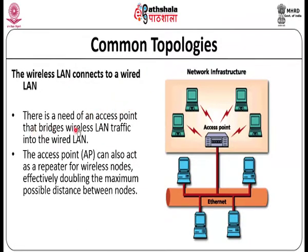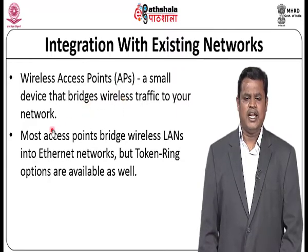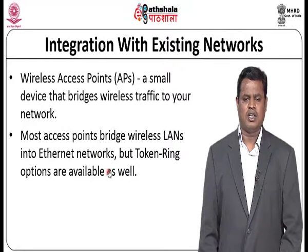There is a need for an access point that acts as a bridge between the wireless user and the wired network. The access point is similar to a repeater in a wired network — it helps to double the maximum possible distance between nodes. Integration with the existing network: a wireless access point is a small device that bridges the wireless traffic to your network. Most access points bridge wireless LAN into the ethernet, though some token ring and token bus LAN technologies are also optional, but the majority of access points are connected with ethernet technology.